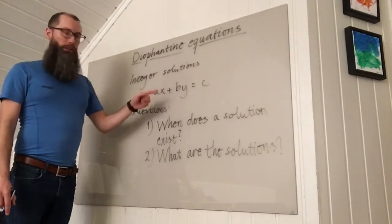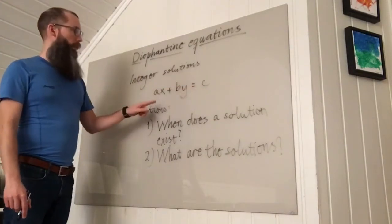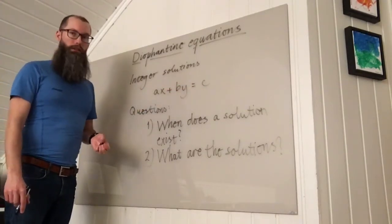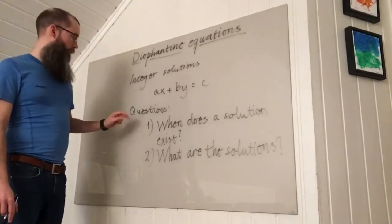It's a linear equation. A, B and C are given integers. X and Y are integers to be determined. And we'll look at two questions.